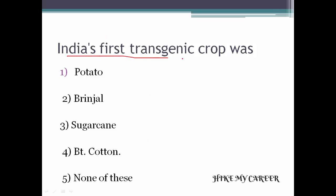Next question: India's first transgenic crop was — Option 1: Potato. Option 2: Brinjal. Option 3: Sugar Cane. Option 4: Bt Cotton. Option 5: None of these. Answer is Option 4: Bt Cotton.